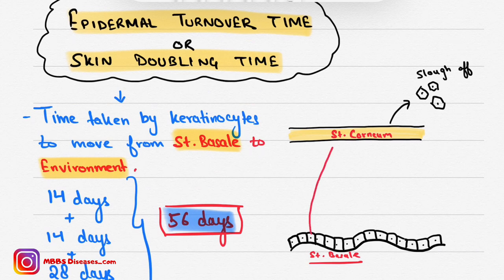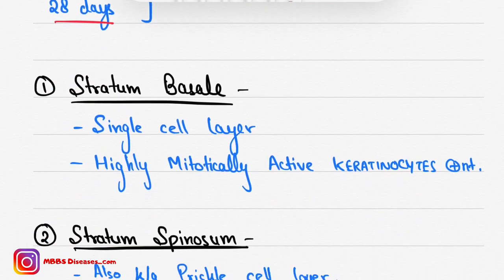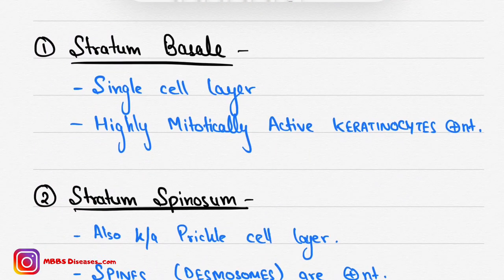From stratum basale to the lower part of stratum corneum, keratinocytes take 14 days. From the lower part to the upper part of stratum corneum, they take another 14 days. The slough-off time from the topmost layer of stratum corneum is 28 days. So the total is 56 days: 14 + 14 + 14 + 28 days.